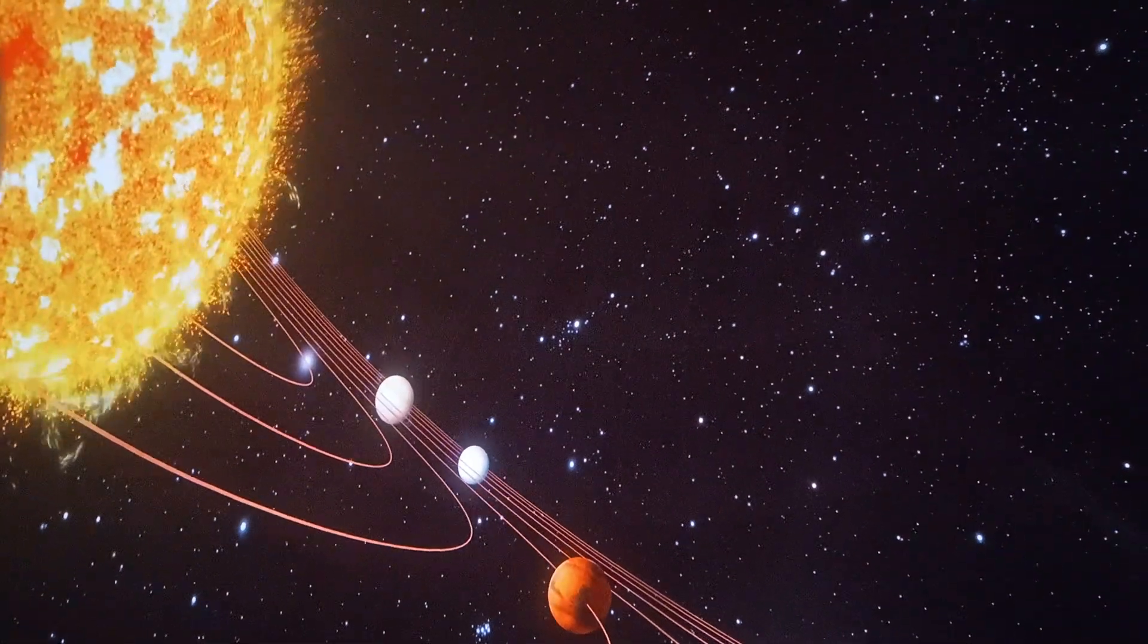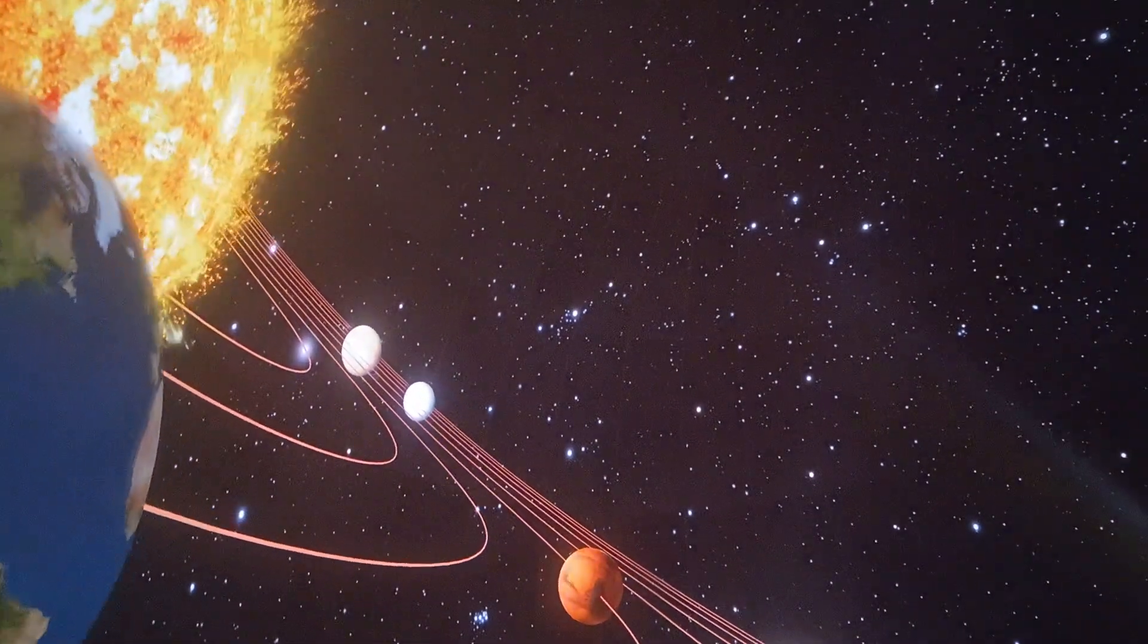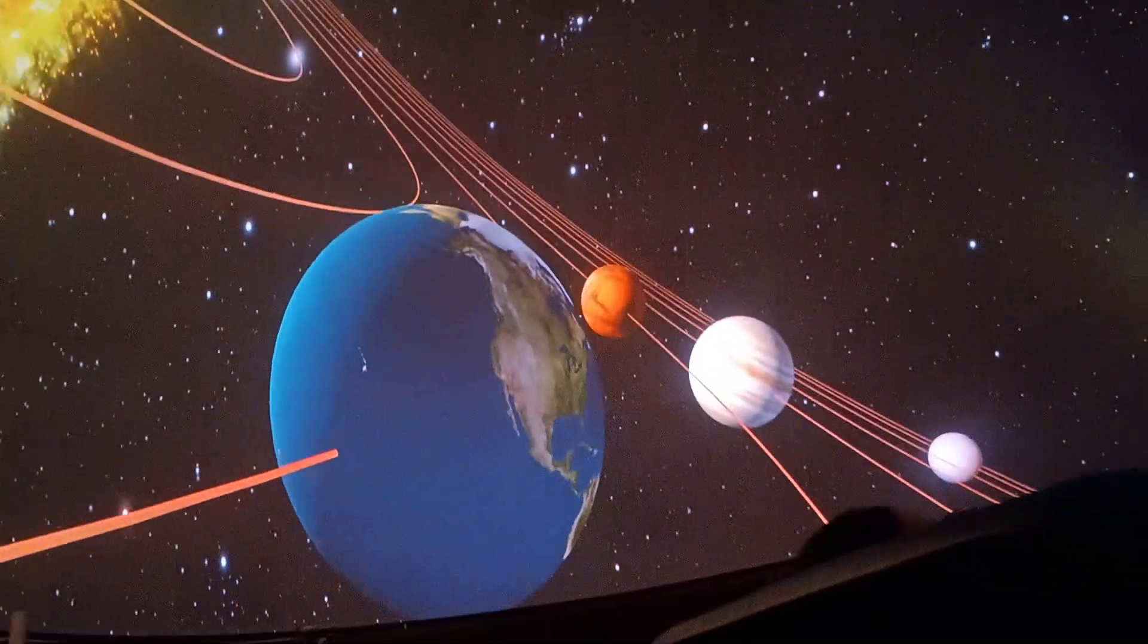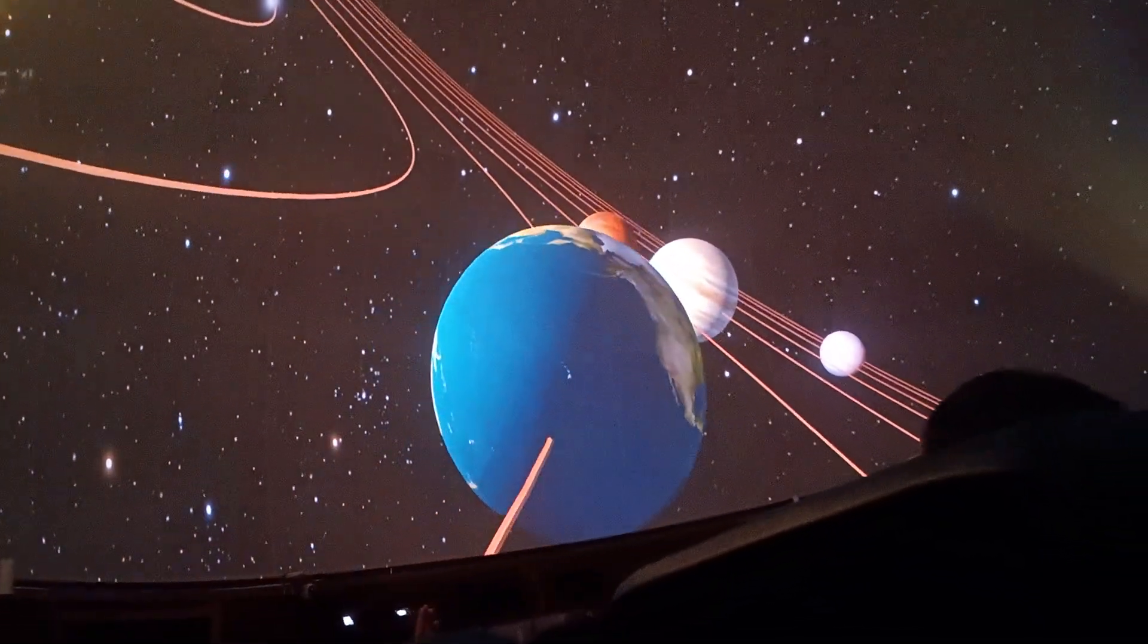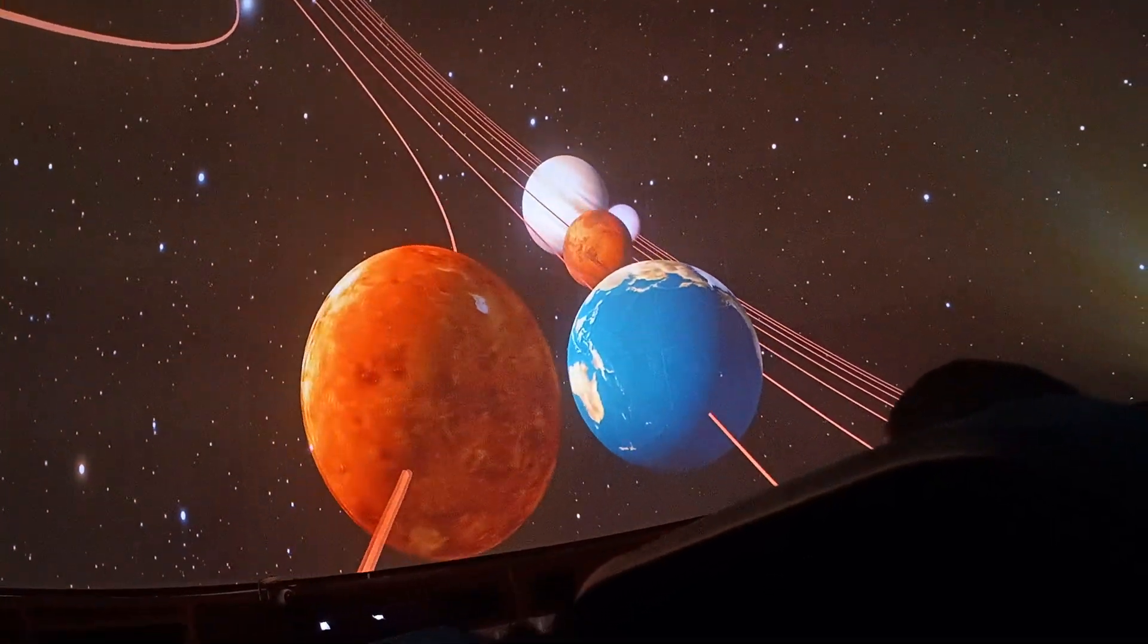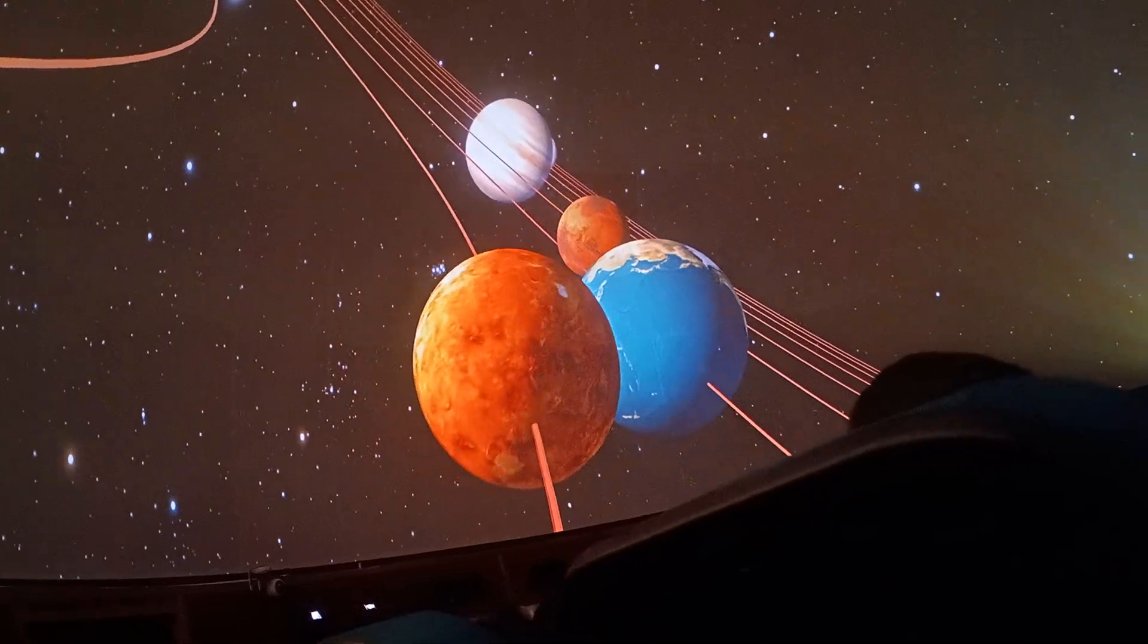Mercury, Venus, Earth, Mars, Jupiter, Saturn, Uranus, and Neptune. Smaller leftover bits of matter became dwarf planets like Pluto, asteroids, and comets.